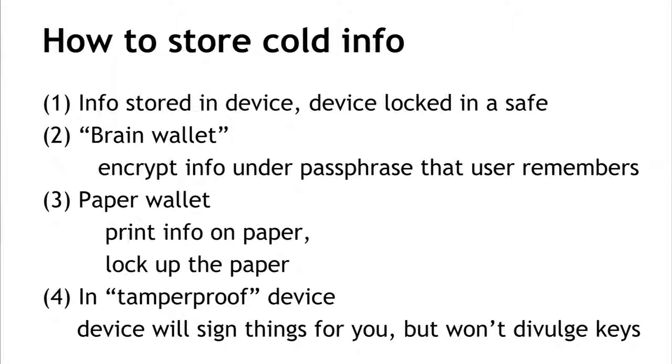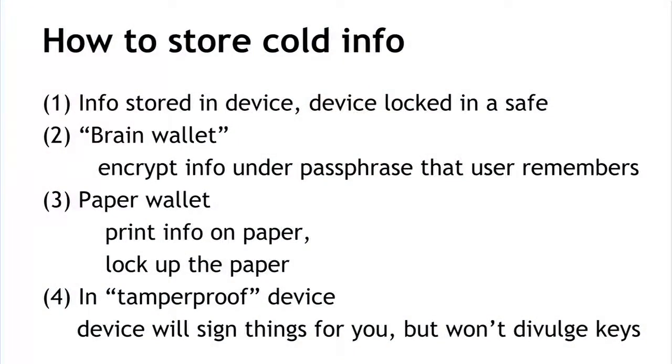The second method is called a brain wallet. We take the information we want to protect and encrypt it under some passphrase or password that the user remembers. To get the information back later, we ask the user for the passphrase and then decrypt. If the crypto is done correctly and the user picked a good passphrase, security is as good as the security of the passphrase. As long as the user isn't tricked or coerced into giving it up and the adversary can't guess it, our data is secure — though this is subject to the same attacks that passwords typically face.